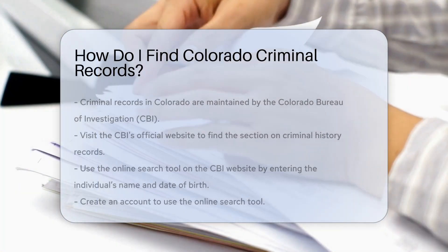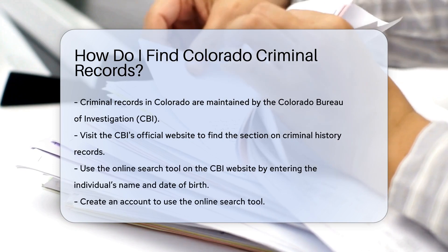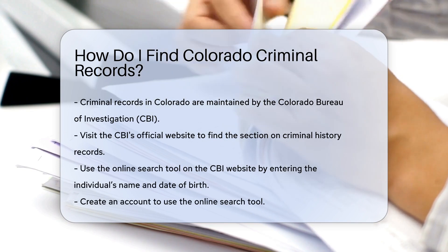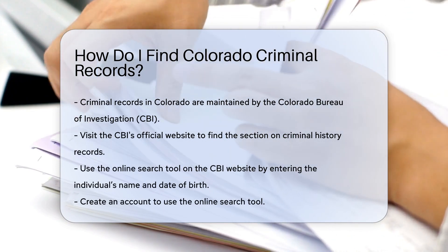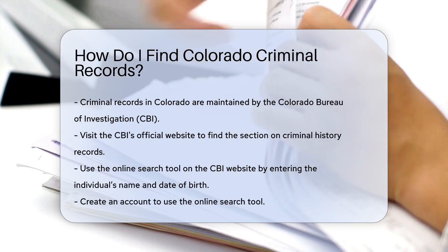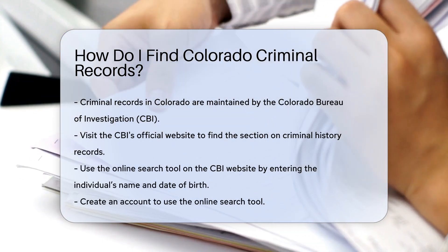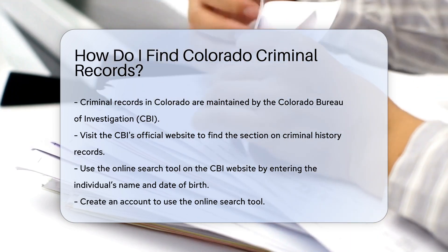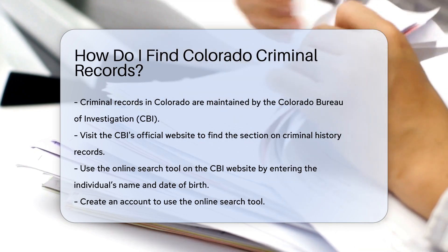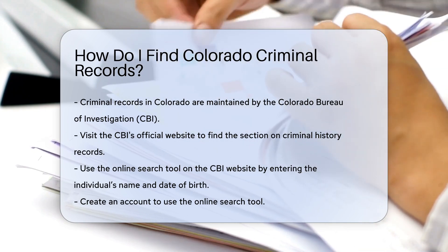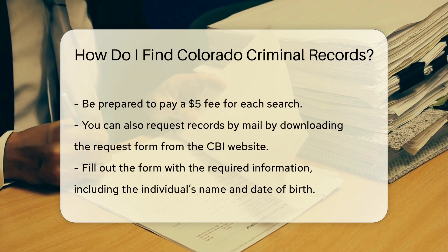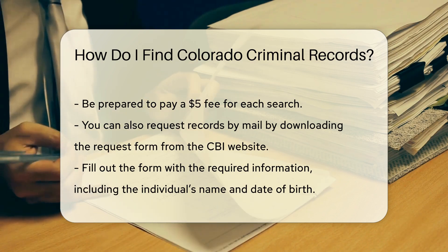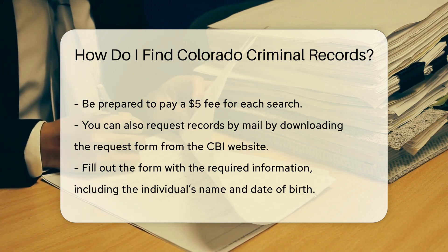Finding Colorado criminal records involves a few steps. First, you need to know which agency holds the records. In Colorado, criminal records are maintained by the Colorado Bureau of Investigation, CBI. Visit the CBI's official website and look for the section on criminal history records. There you will find an online search tool that allows you to search for criminal records by entering the individual's name and date of birth. You will need to create an account to use the online search tool. Once your account is set up, you can begin your search. Be prepared to pay a fee — as of now, the fee is $5 per search.